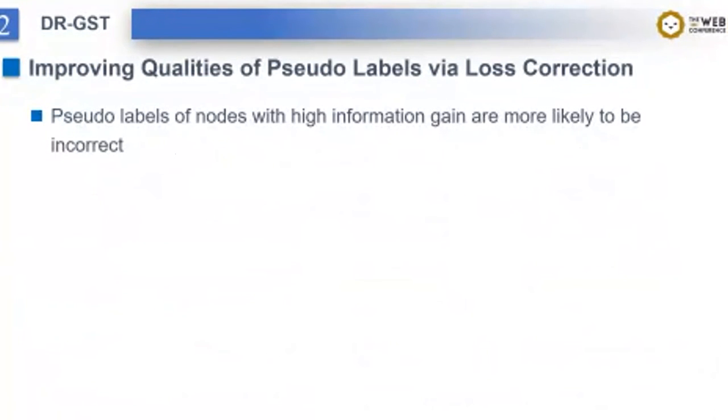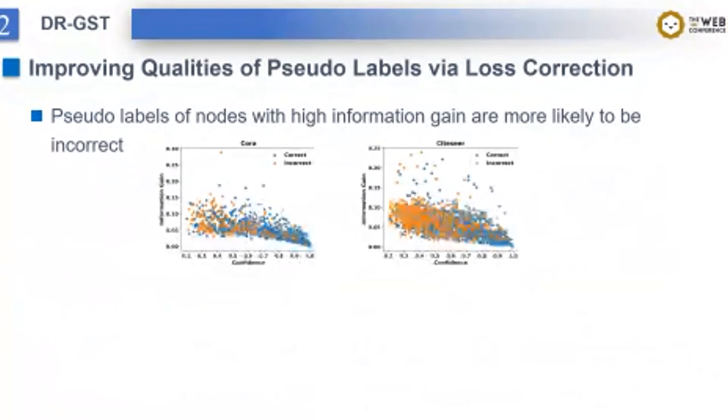So far, we have corrected the shifted distribution introduced by self-training via information gain. Is everything okay? No. Let's recall the relationship between confidence and information gain shown before. Blue nodes are correct predictions and orange nodes are incorrect. We can observe that pseudo labels of hard nodes are more likely to be incorrect. Meanwhile, we note that our method will also focus more on hard nodes. In other words, the impact of incorrect pseudo-level nodes are enlarged during self-training.